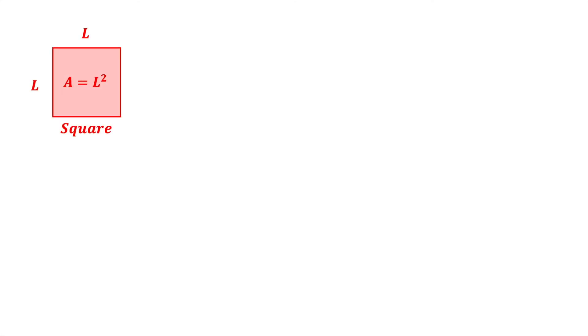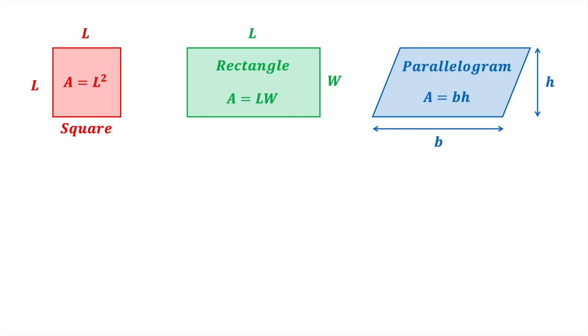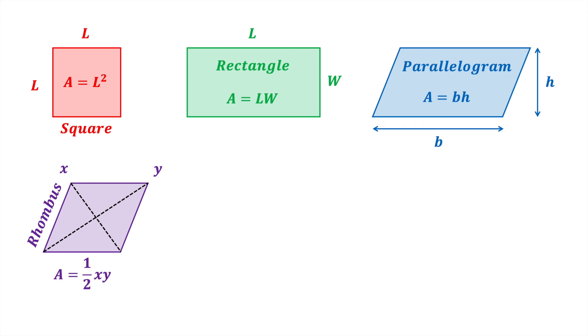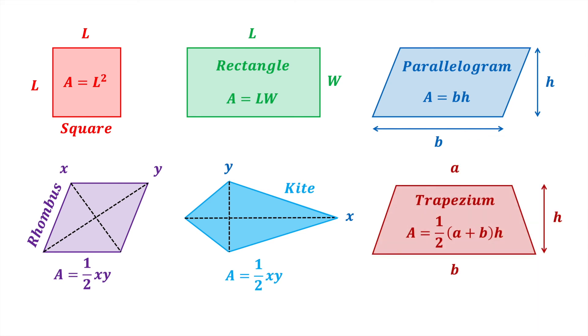So now you know where each of the quadrilateral area formulas come from, let's review them. For the square, the area is l squared. For the rectangle, the area is length times width. For the parallelogram, the area is base times height. For the rhombus, the area is half xy. For the kite, the area is also half xy. And for the trapezium, the area is half (a plus b) times height.